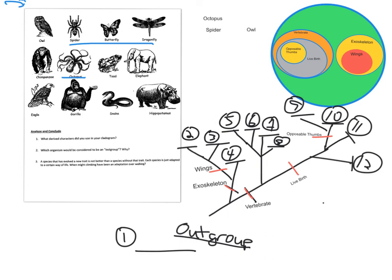See if you can come up with different trees that make sense and still follow this rule: everything after the derived trait on the line has that trait; anything before it doesn't. Come up with different combinations, and let's have a nice discussion when I get back on Thursday. Now let's take a look at the last question: a species has evolved a new trait — that trait is not necessarily better than a species without it. When might climbing have been an adaptation over walking? Think about what you'd need to climb a tree.